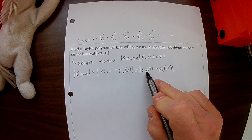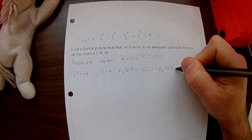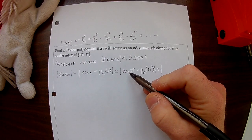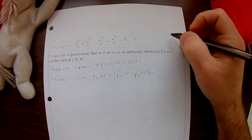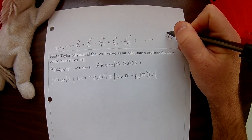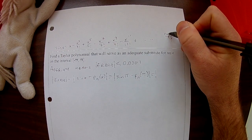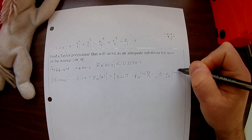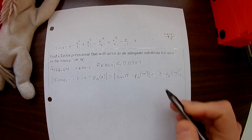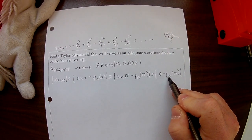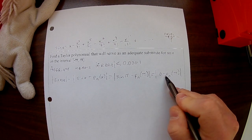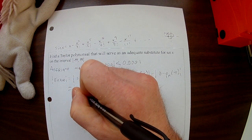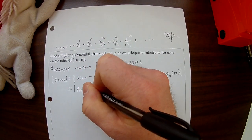The error is going to be equal to the magnitude of sine of pi minus p sub n of pi — just going at the endpoints, so that every other error is even less than that. I know what sine of pi is. Going off of my unit circle, pi is at negative 1 comma 0 — the y value is 0. So this is going to be 0 minus p sub n of pi, which is just the absolute value of p sub n of pi. All I have to do is find the absolute value of p sub n of pi.